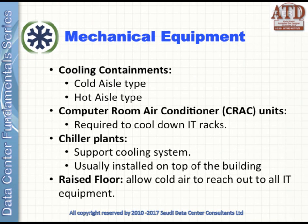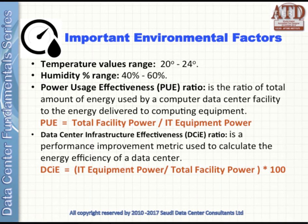The mechanical part of the data center covers the following. First, cooling containment — cold or hot aisle containment types — to provide physical separation of hot and cold aisles using blanking panels. Second, CRAC units to supply the data center with cold air. Third, chiller plants, usually located on top of the building to support CRAC units. And finally, the raised floor, which allows cold air to reach all your IT equipment.